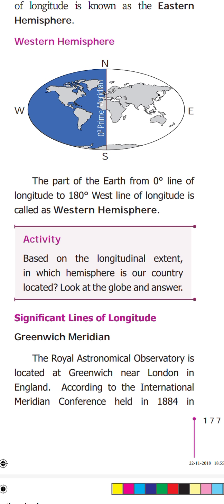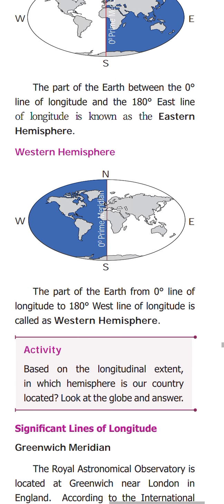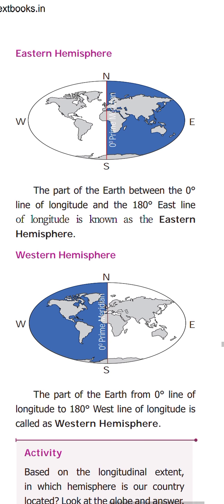Hemisphere means half of the sphere. If the half sphere is towards the east it is the eastern hemisphere; if it is towards the west it is the western hemisphere.